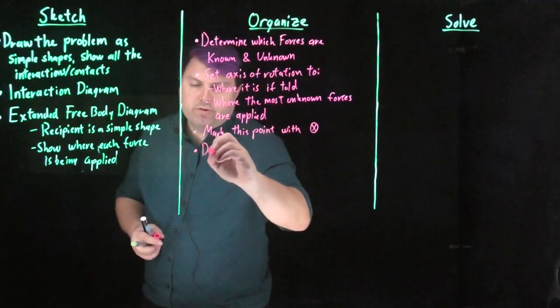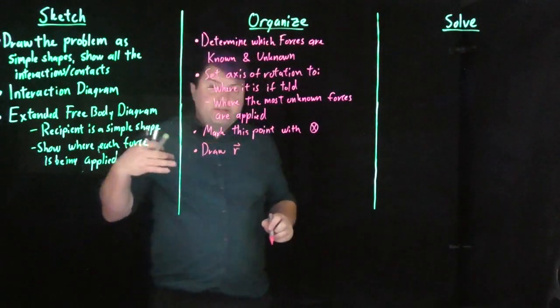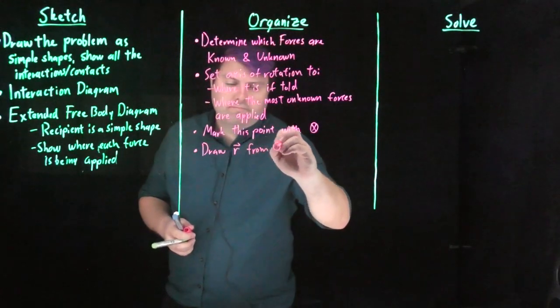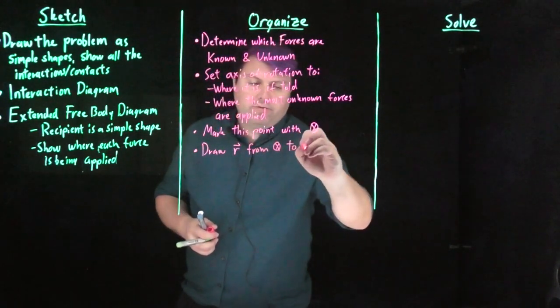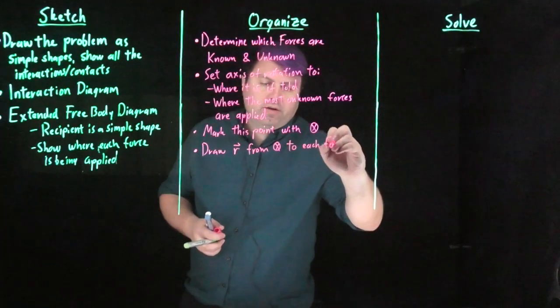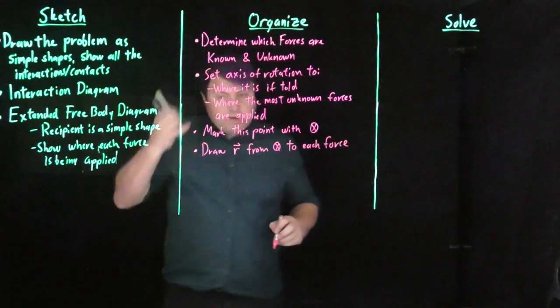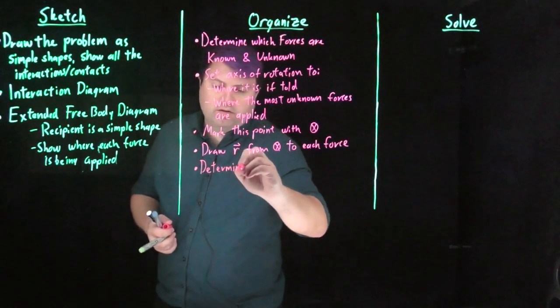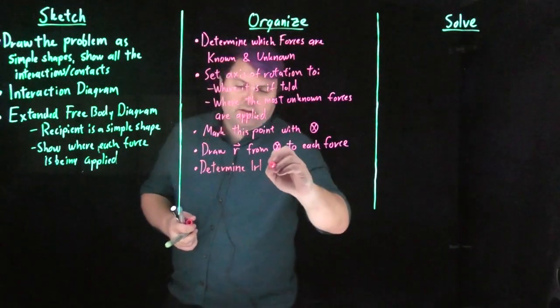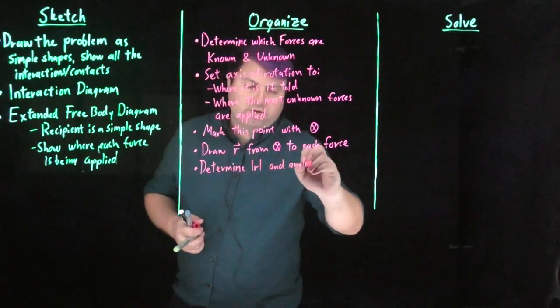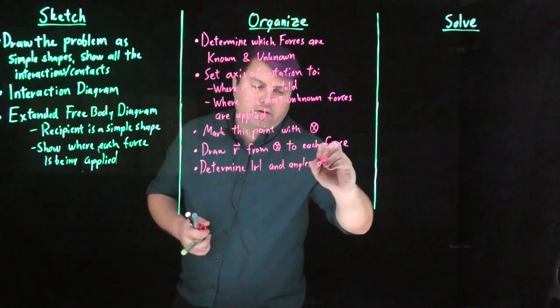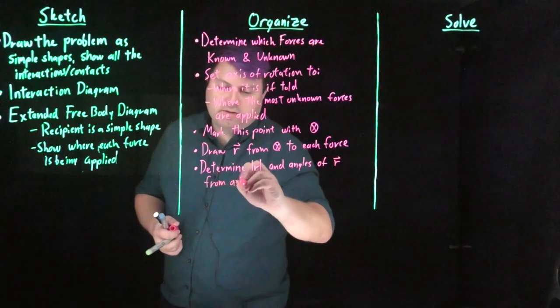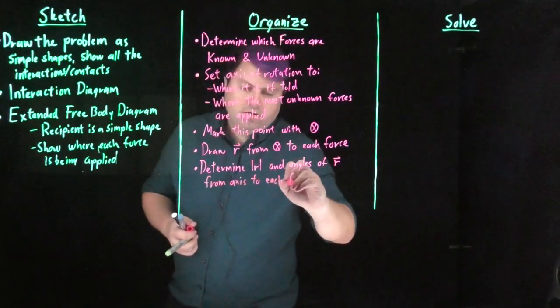Once we have that, we want to draw our vector, the distance, but the vectoral distance, from our axis of rotation to each force. And then we want to determine the magnitude of the distance and the angles of our vector from the axis to each force.